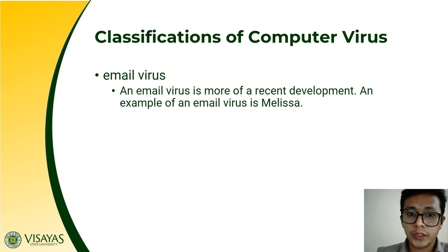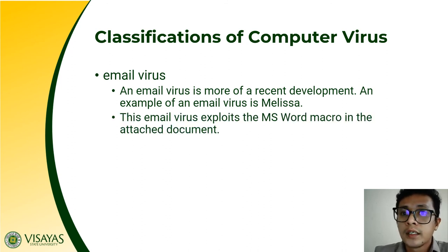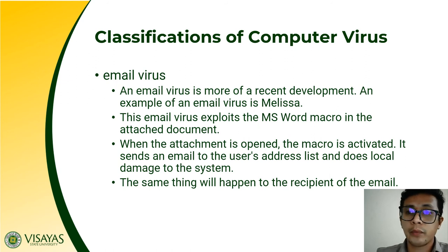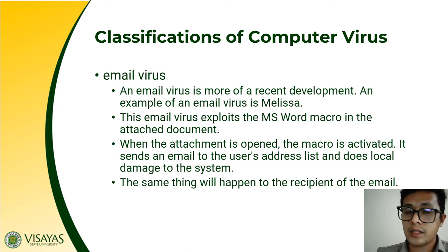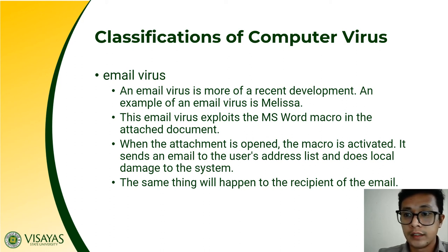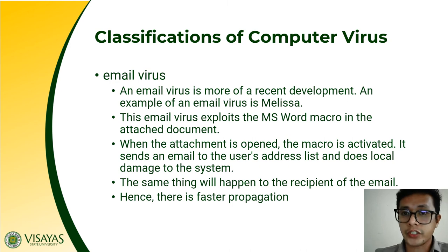Another type of virus is the email virus. An email virus is a more recent development — an example is Melissa. This virus exploits the MS Word macro in the attached document such that when the attachment is opened, the macro is also activated. Once activated, it sends an email to the user's address list and causes local damage to the system. The same thing will happen to those who receive the email — when you download the attachment and open it, the macro virus also gets activated, copies your address list, sends more emails, and does local damage. This results in faster propagation in terms of an email virus — so be careful when opening and downloading attachments sent by unverified users.